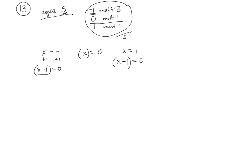Now, the minus 1 has a multiplicity of 3, so I've got to have 3 of these. So my function then, I'll call it f, will need to have 3 of these, 1 x and an x minus 1.